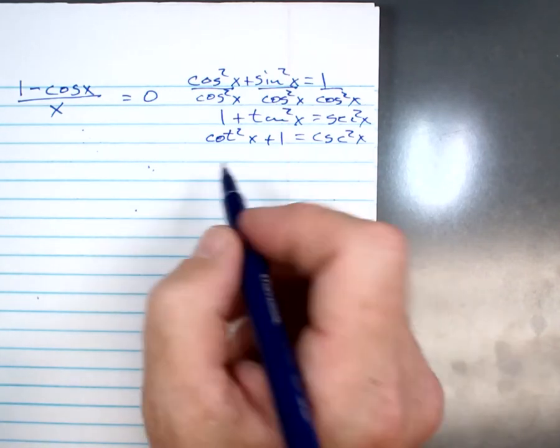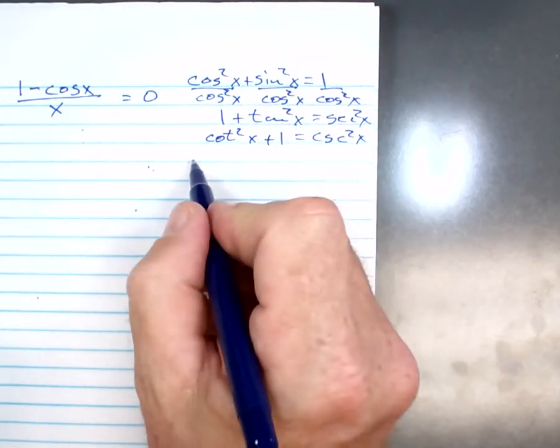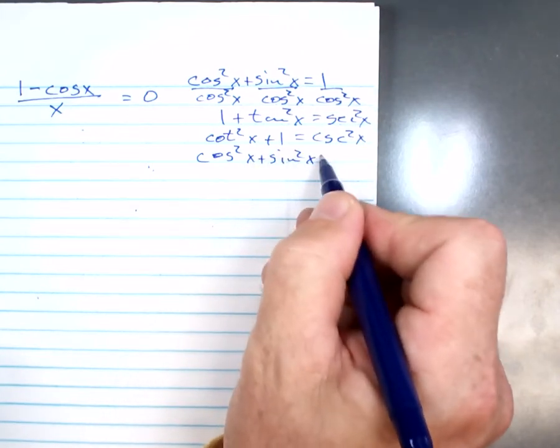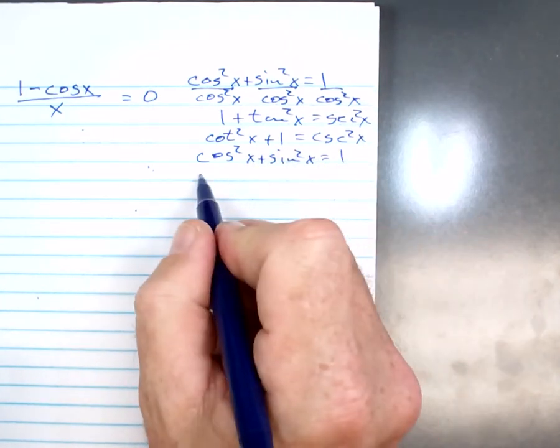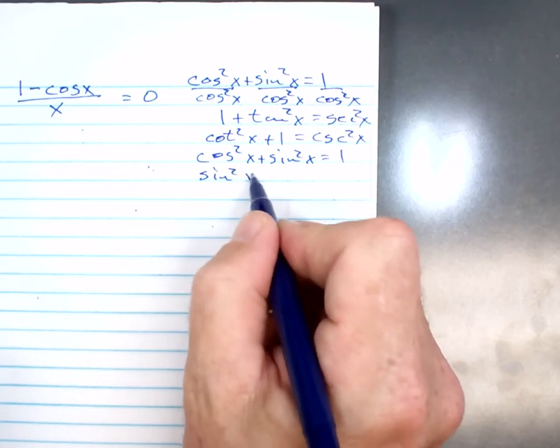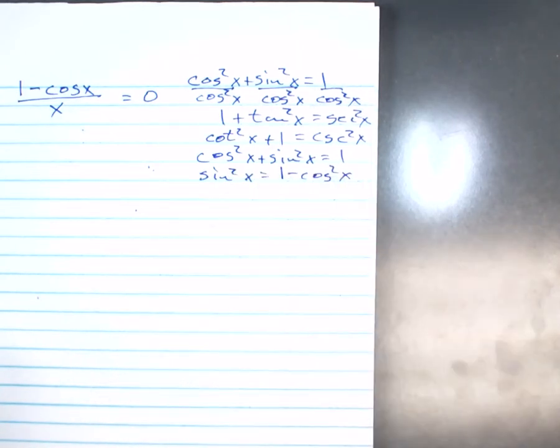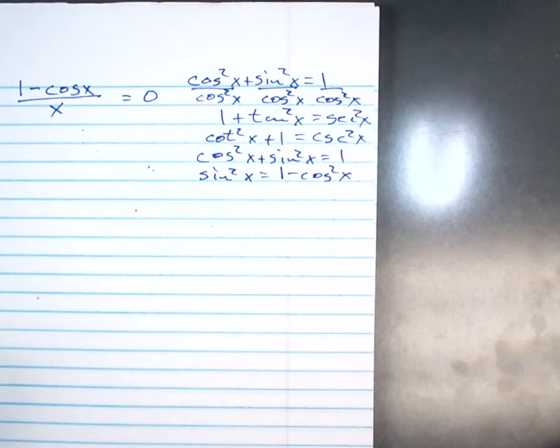But this is also what I can do. Again, I'll write cosine squared x plus sine squared x equals 1, and I'm going to write this as sine squared x equals 1 minus cosine squared x. What did I do? I subtracted cosine squared from both sides, right?